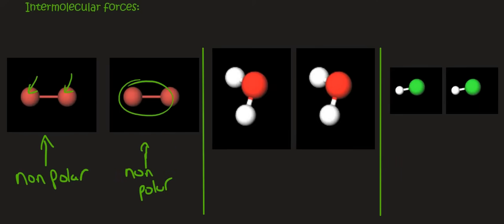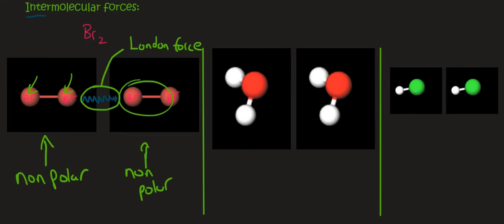So if you wanted to boil this compound — let's say for example it's bromine, and that makes sense because there's a Br on either side — you would have to break the forces of attraction between the molecules. You wouldn't break these bonds inside the molecule. Remember, you're breaking the intermolecular forces, not the intramolecular bonds. And so when you have a non-polar and a non-polar, the force between them is called a London force. I hope that rings a bell from grade 11.